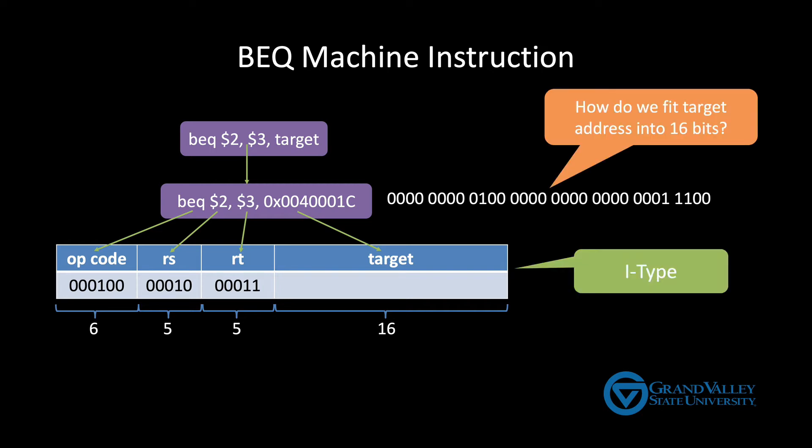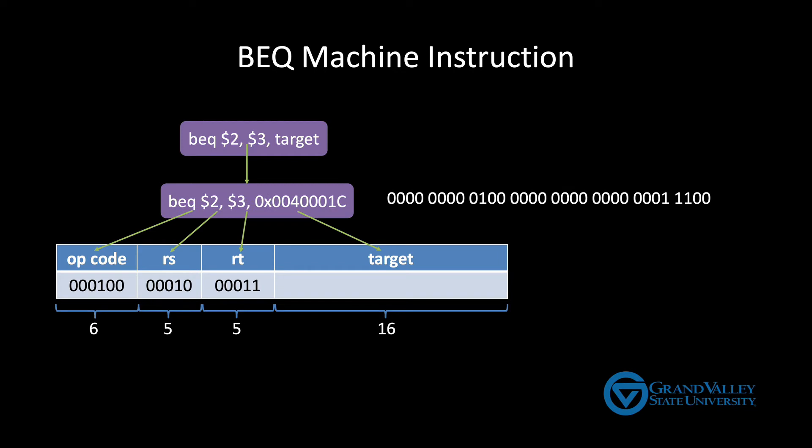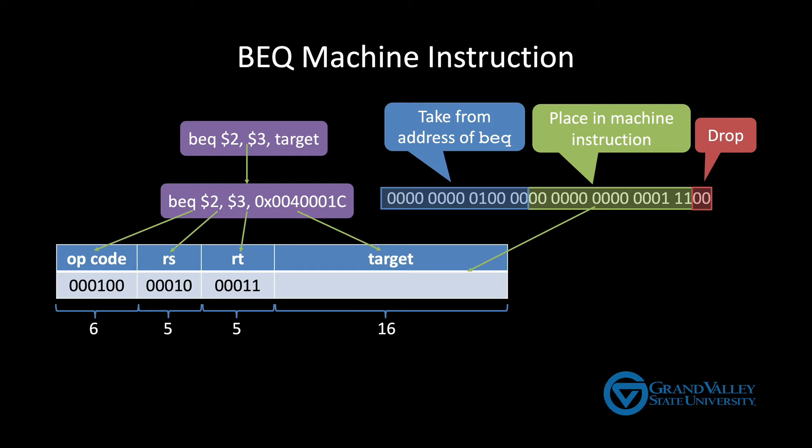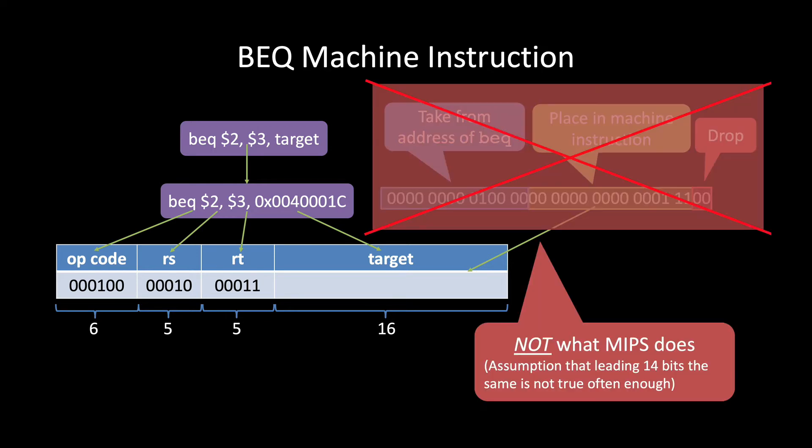So how do we fit the 32-bit target address into the 16-bit space we have available for it? One idea is to try a similar approach to what we did with the jump instruction. So that would mean drop the two lowest bits, because they're always zero, place the next 16 bits in the machine instruction, then assume that the target address's most significant bits are identical to those in the branch instruction. This isn't a terrible idea, but it's not what MIPS does. It's possible to make it work, but there is a situation where it would get a little ugly.